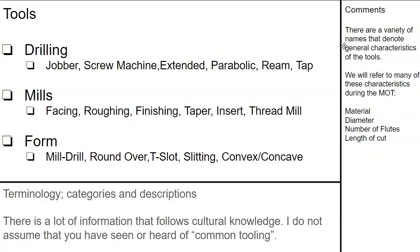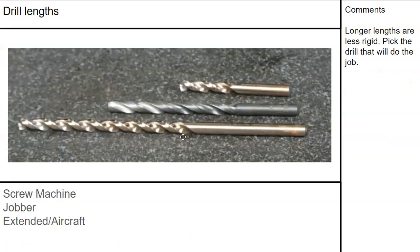There are varieties of names that denote general characteristics. We'll refer to many of these during machine operations and tooling. Mainly we're looking at the material of the tool, the diameter, number of flutes, and length of cut. For drills, screw machine length is more rigid — it has less flute length, but it will also generate less harmonic, less 'singing' as it drills the hole.